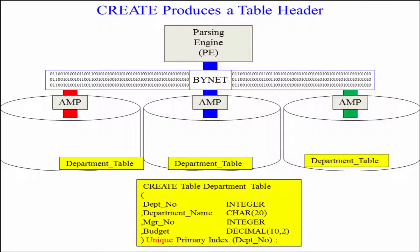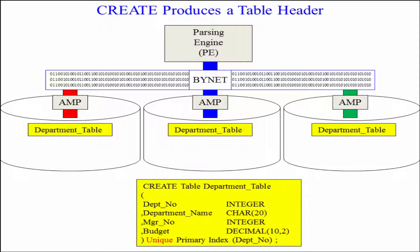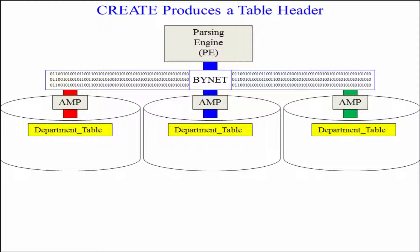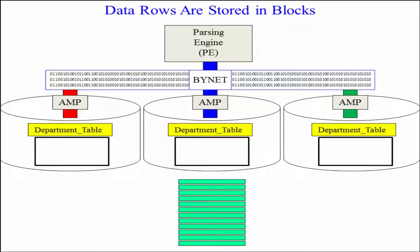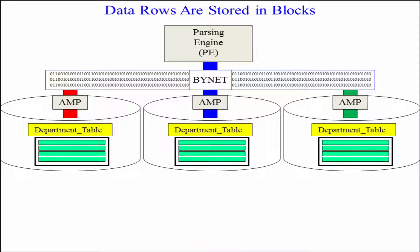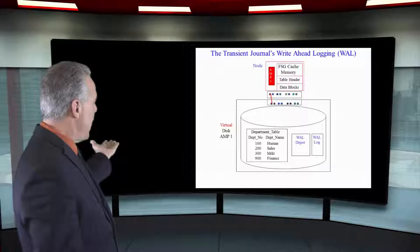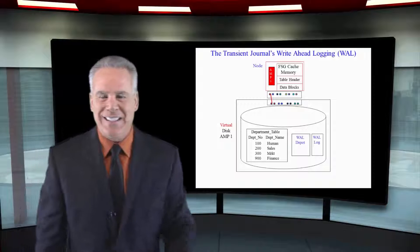When the department table was created, a table header went to every single amp. They all had that table. Then they distributed those rows and they had the rows that they own. As you can see they stored that in a block. This amp has four rows in its data block.